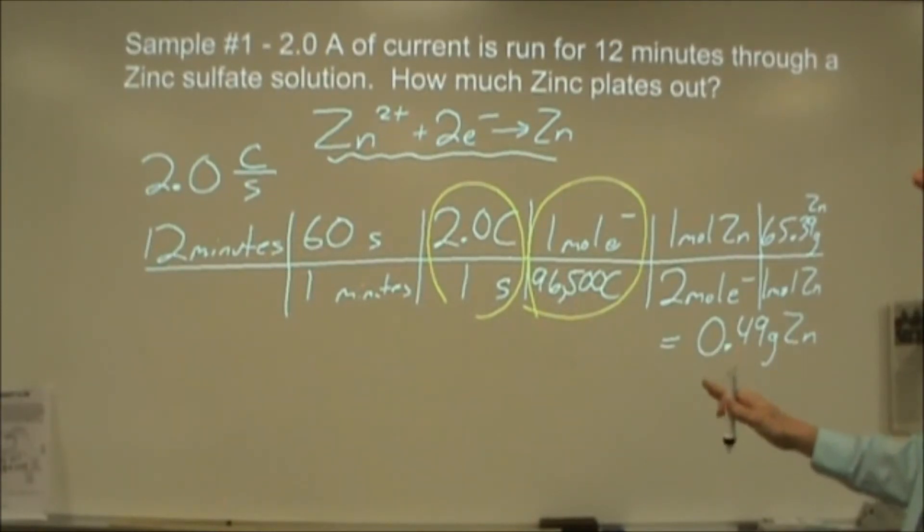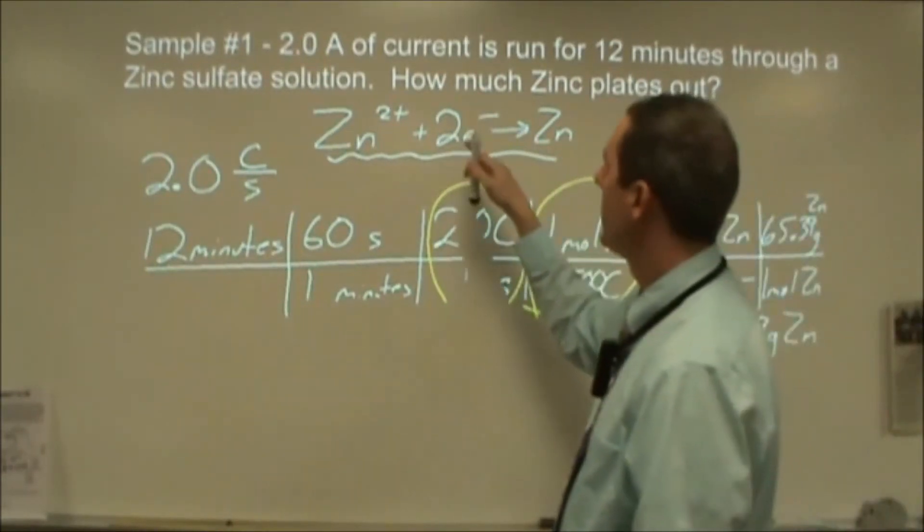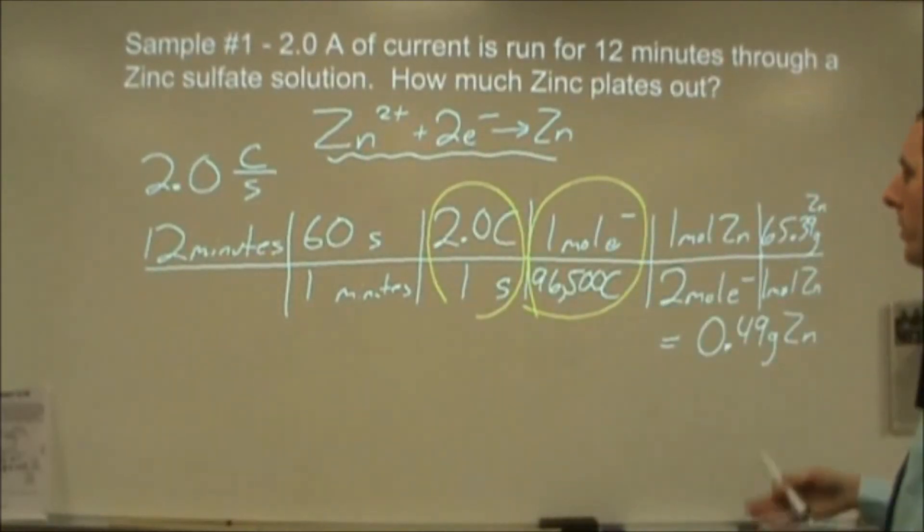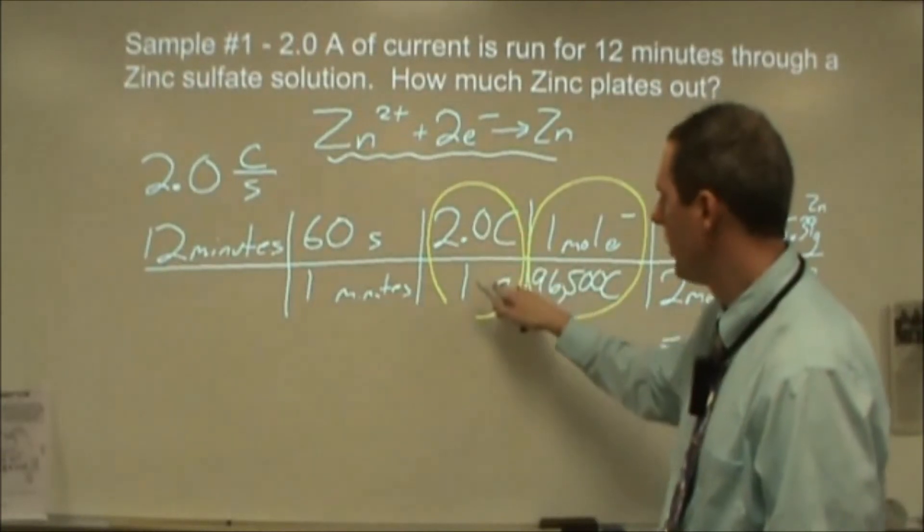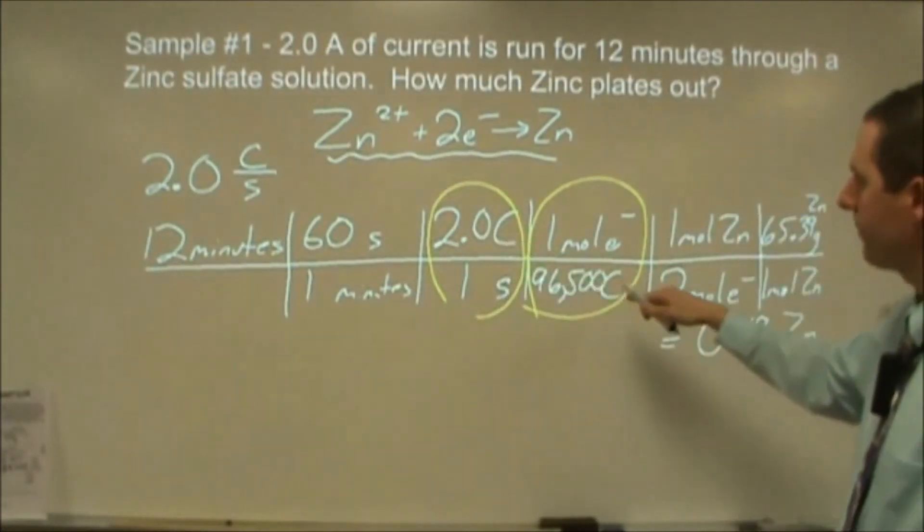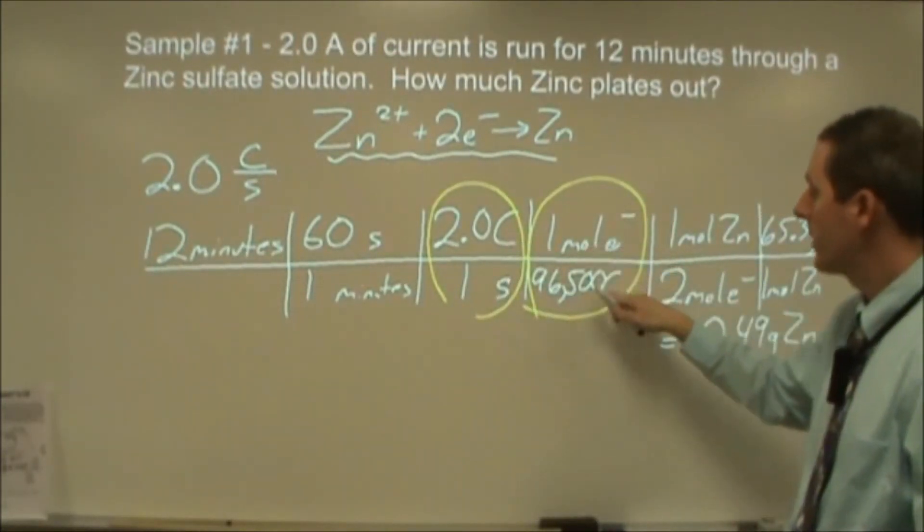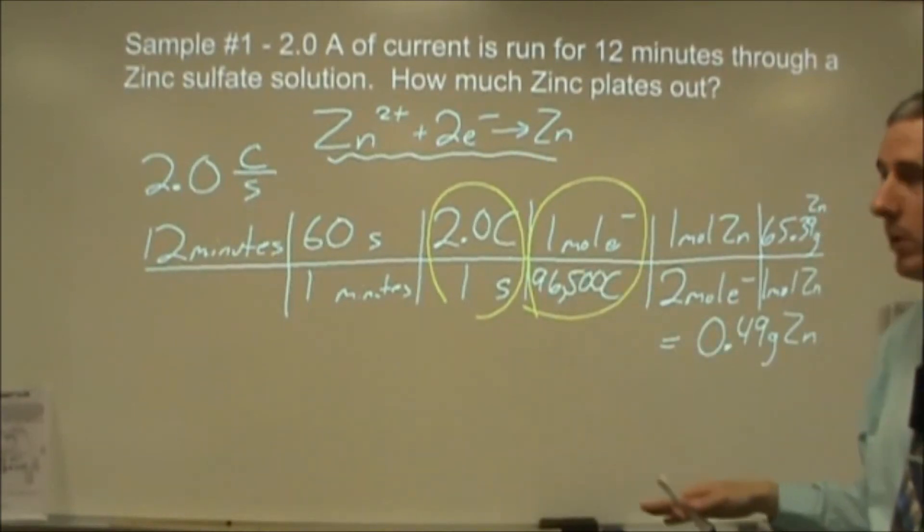So this is one type of problem that you would see if you're given the amount of time and the current, then you're looking at a situation where you can set up a simple stoichiometry problem as long as you know to use the amps as coulombs per second to convert, and that you need to interject the Faraday constant into the middle of that conversion.